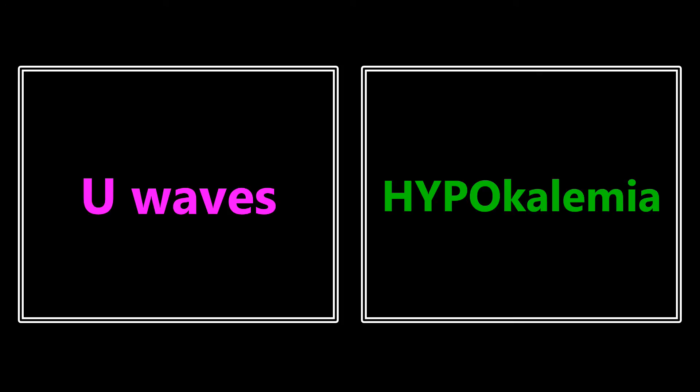U waves — if you see this mentioned in a question or can read it on an EKG, it's talking about hypokalemia. Remember, for hyperkalemia there were peaked T waves; for hypokalemia, we're going to have U waves.